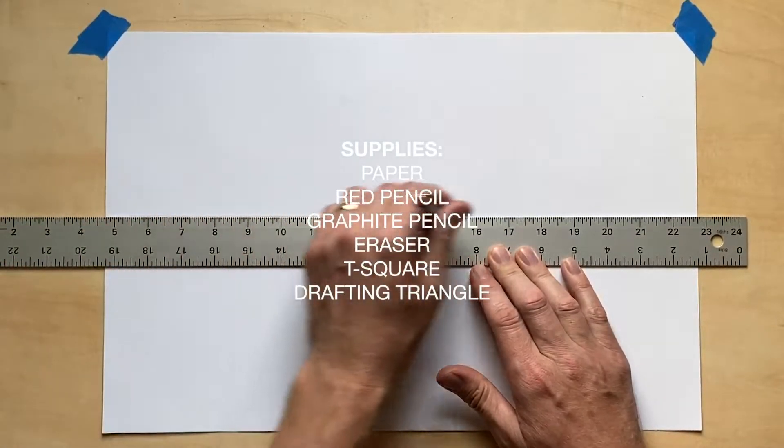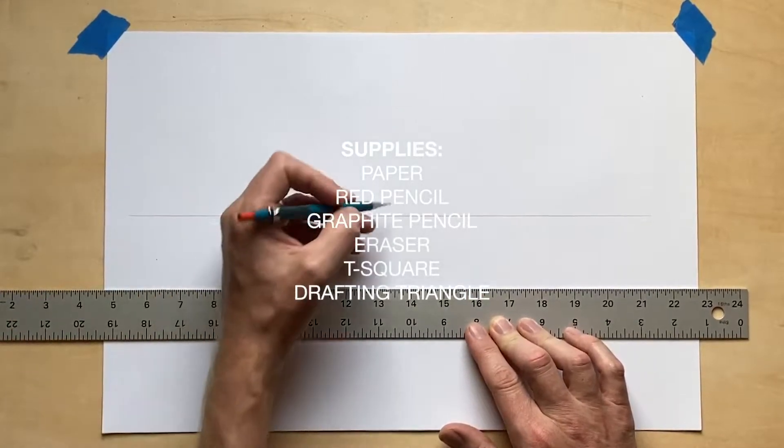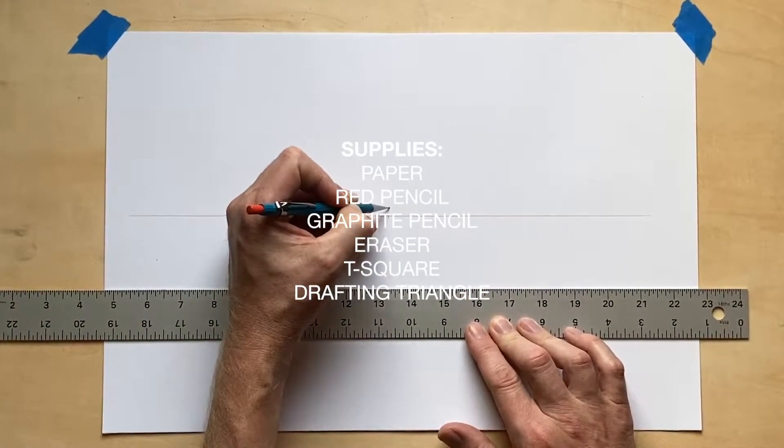For these drawings, I'm using paper, red and graphite pencils, eraser, t-square, and a drafting triangle.